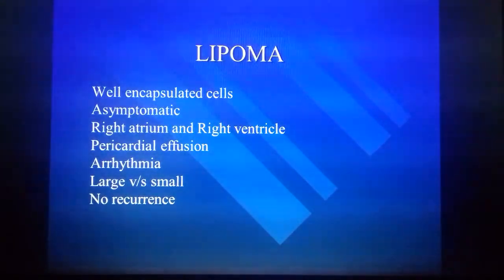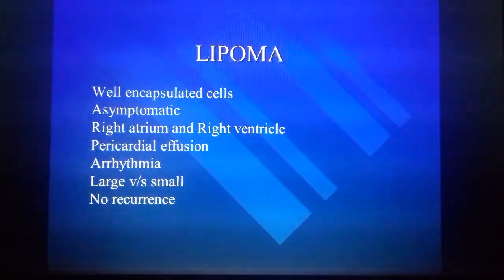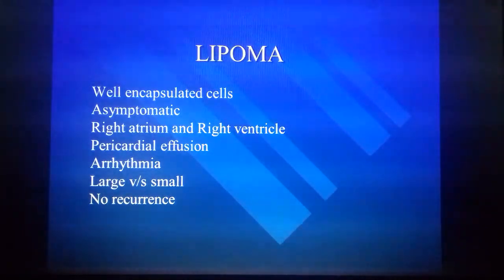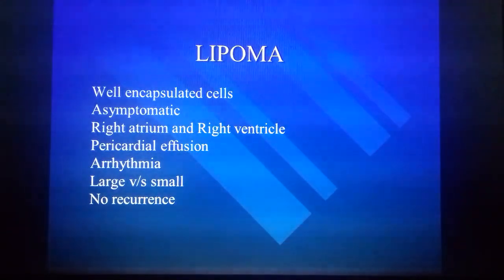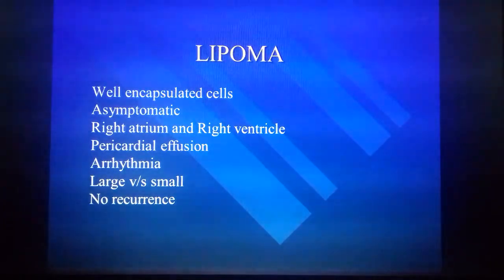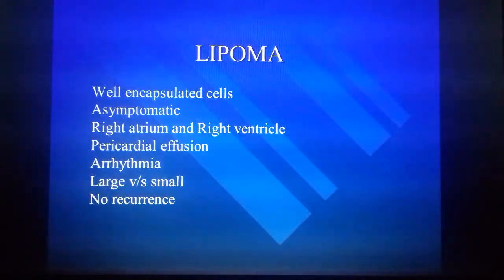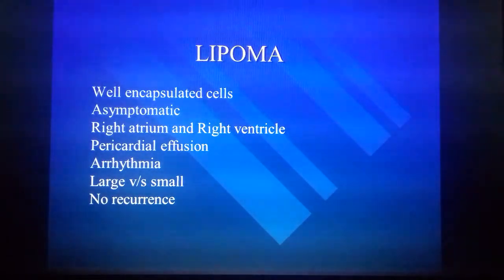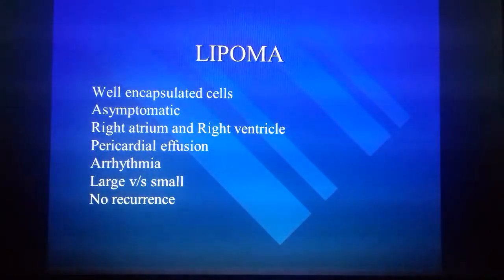Lipomas can be found in any part of the body and the heart is no exception. They are well-encapsulated cells and typically asymptomatic. The right atrium and right ventricle are the common sites. They can be associated with pericardial effusion and could give rise to arrhythmias. They can be large or small, and there are no chances of recurrence.